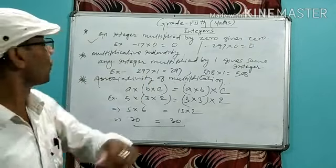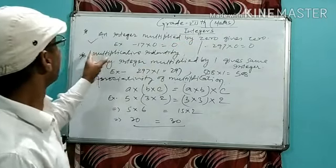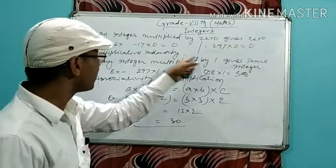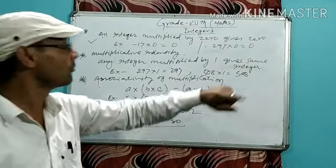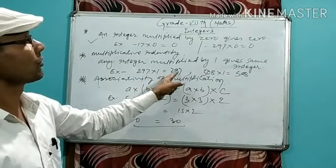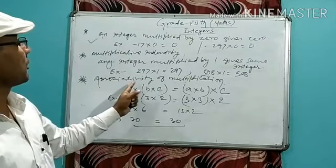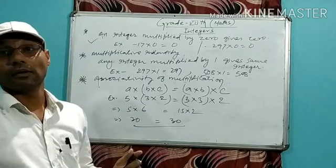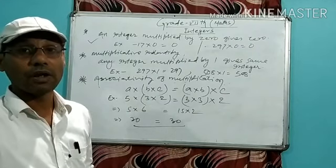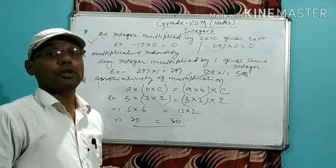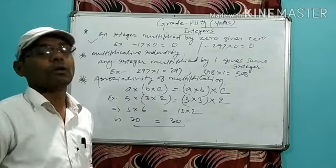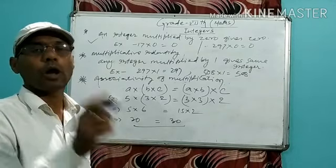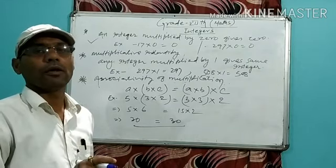To recap: any integer multiplied by 0 gives 0. Multiplicative identity — any integer multiplied by 1 gives the same integer, for example 297 into 1 equals 297. Associativity of multiplication — the grouping of three integers does not change the result. I will give you some questions related to integers in my next video. You have to give your answers. Best of luck, my dear. Thank you.